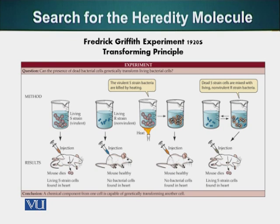There were two types of these bacteria: the S strain and the R strain. The S strain bacteria made smooth colonies on a dish, whereas the R bacteria made rough colonies. When Griffith inoculated mice with living S bacteria, the mice got pneumonia and died. However, when he injected living R bacteria, the mice did not die.